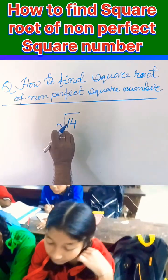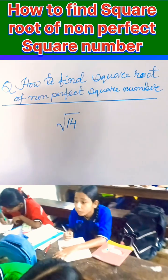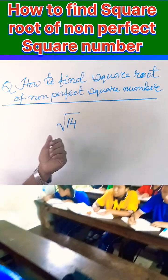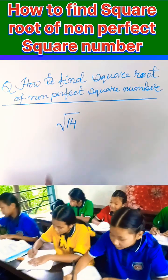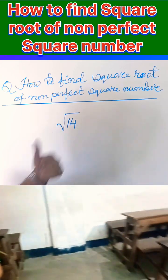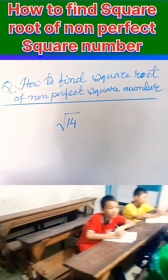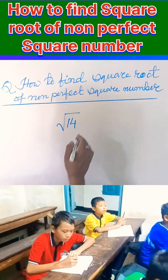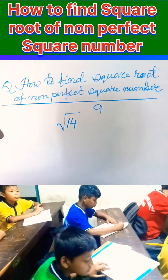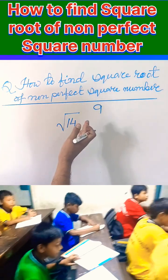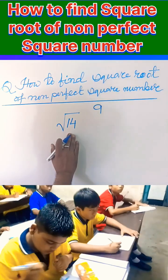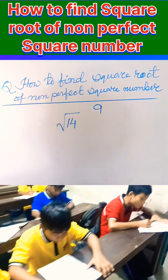We are going to find out the square root of 14. What you have to do is find out the nearest perfect square number of 14. The nearest perfect square number to 14 is 9. Yes, 9 is a perfect square number which is nearest to 14.